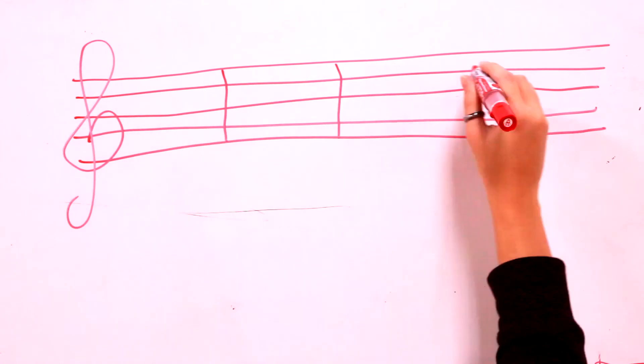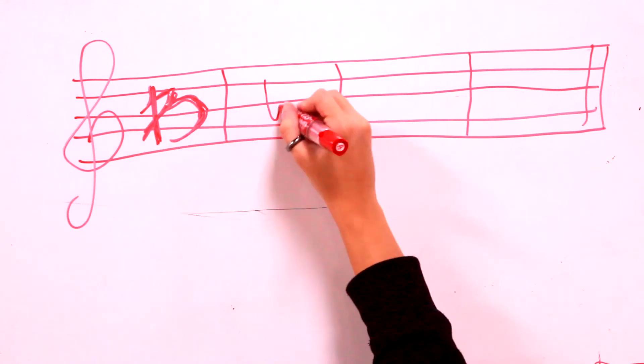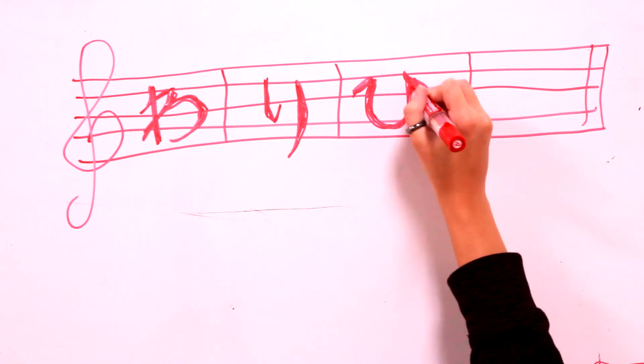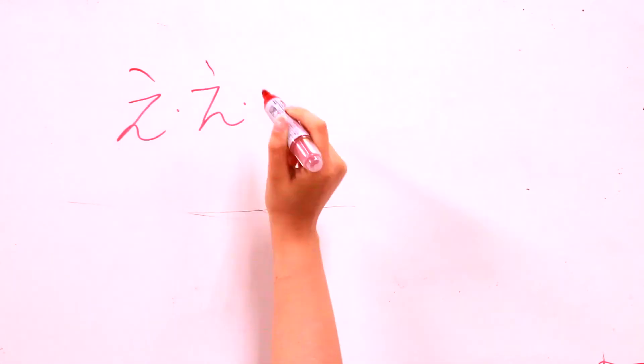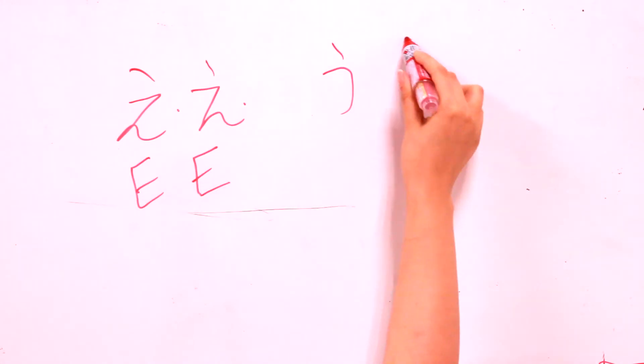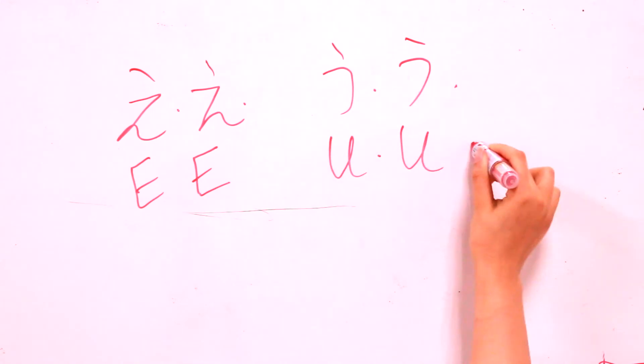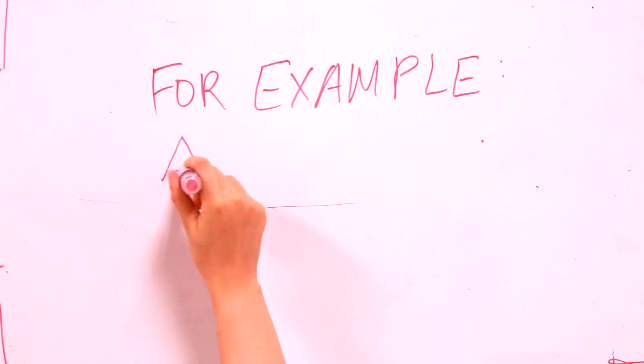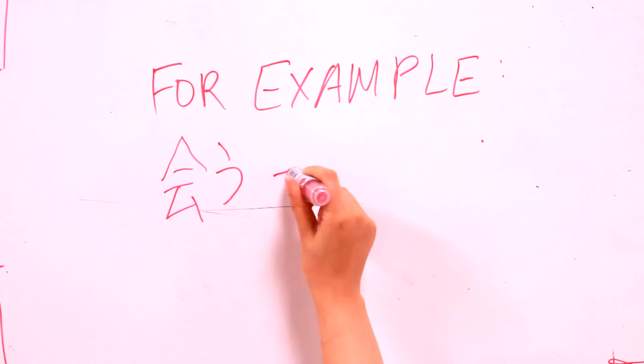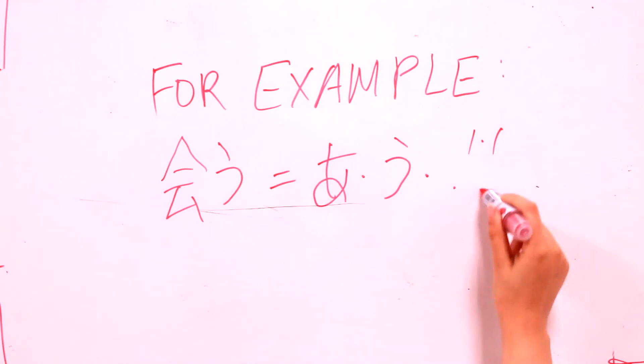Number 2. Each syllable is pronounced with the same amount of time, and generally sounds like it's being cut off at the end. Even in the example 'to meet', you have two vowels and they both occupy the same amount of time. アウ アウ